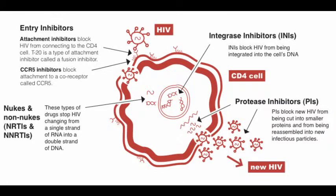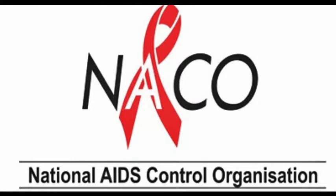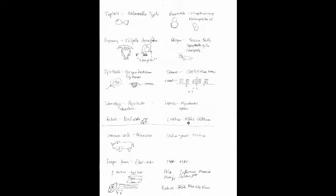HIV treatment targets three enzymes: integrase, protease, and reverse transcriptase. Treatment involves inhibiting all three functions — reverse transcriptase, protease, and integrase do not work in the HIV cell. This only slows down the process as HIV is not curable. NACO (National AIDS Control Organisation) is the organization helping in the treatment of AIDS.